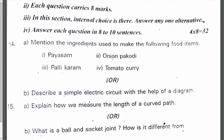Mention the ingredients used to make the following food items. For making payasam, we require sugar and vermicelli. For onion pakoda, we require gram flour, onions, and some spices. For pallikaram, we require ground meat, spices, red chilli, and tomato — some basic spices with tomato.